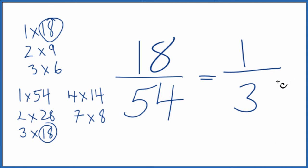And these are equivalent fractions. If you divide 1 by 3 or 18 by 54, you'll get the same number.